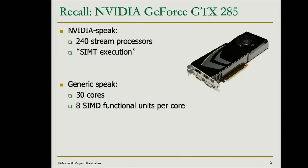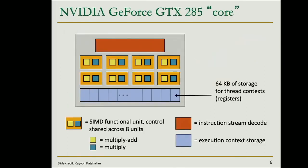Inside one GPU core — one streaming multiprocessor in NVIDIA terminology — we have different lanes. Inside each lane, we may have several processing elements or ALUs. For example, units able to do multiply-accumulate or multiply-add operations, very useful for linear algebra and neural networks. We can also have special units for integer computation, floating-point computation, and this composition has changed over time across different GPU architectures.